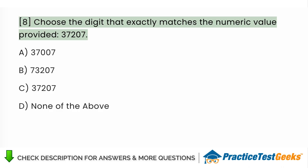Choose the digit that exactly matches the numeric value provided, 37207 A. 37007, B. 73207, C. 37207, D. None of the above